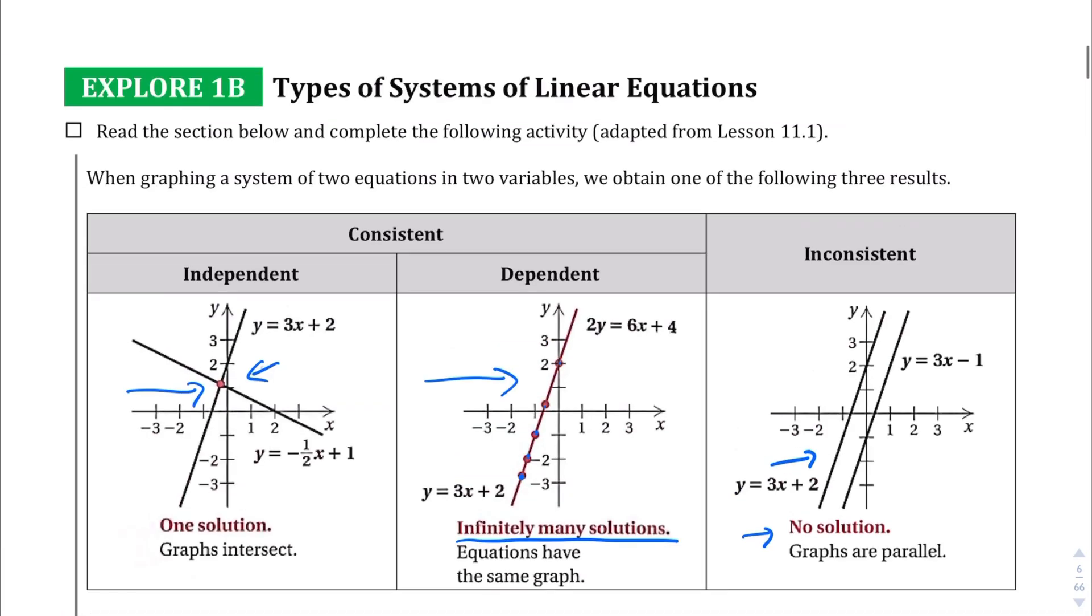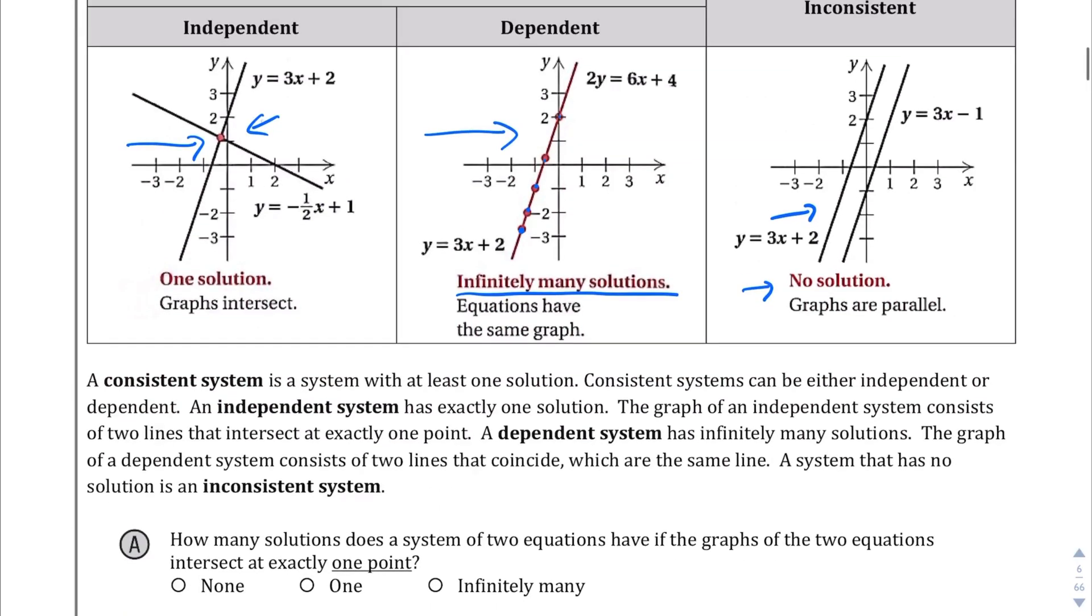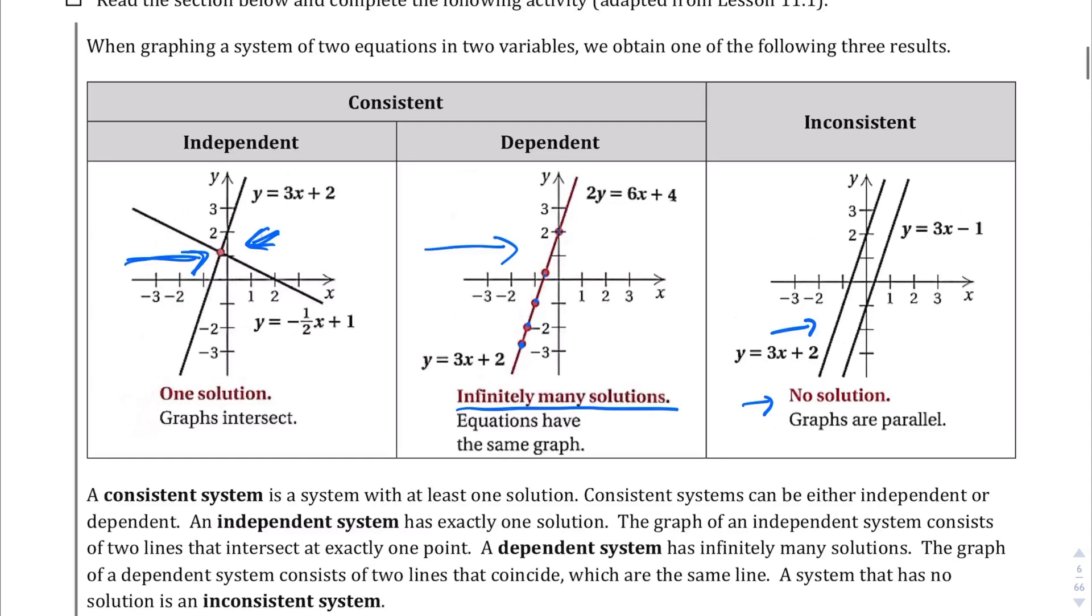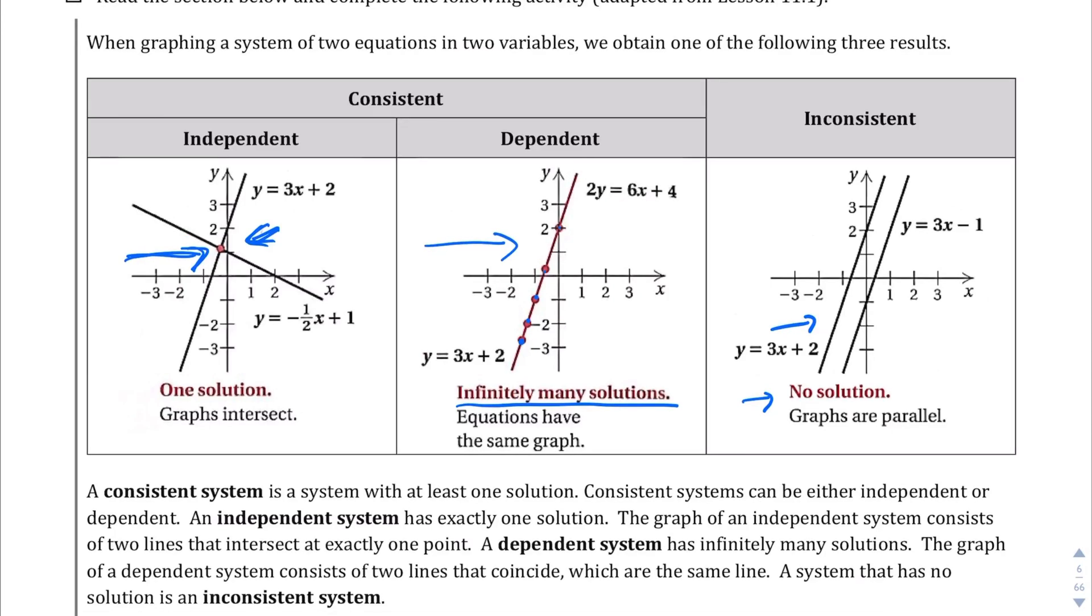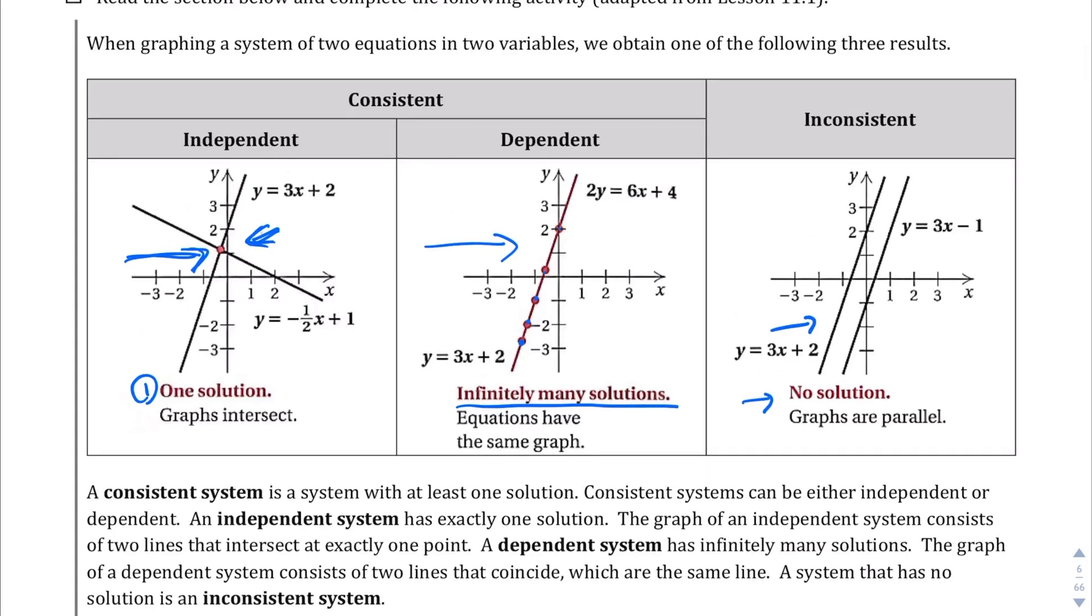Okay, and in this next section for Explore 1b, I will let you read it, but basically there's three types of systems of equations here. There's the first type, where you have one solution, and one solution is when they intersect at one point. The second type is when they have infinitely many solutions, and that's when you have two lines right on top of each other, and because of that, any point you pick will fall on both lines, and it'll fall on both lines at infinite points, because they're right on top of each other.